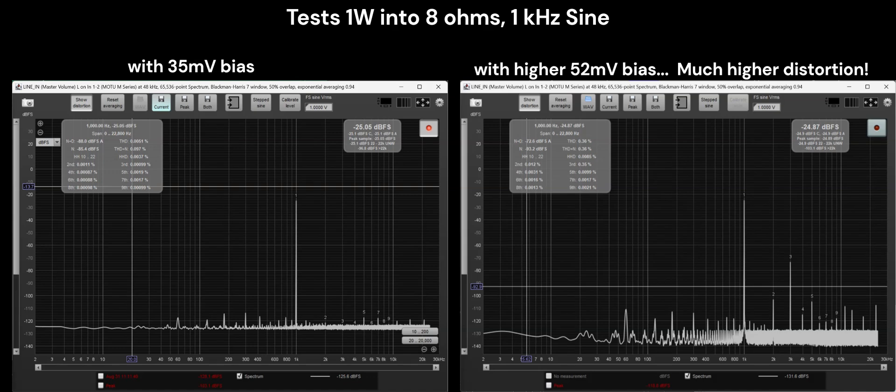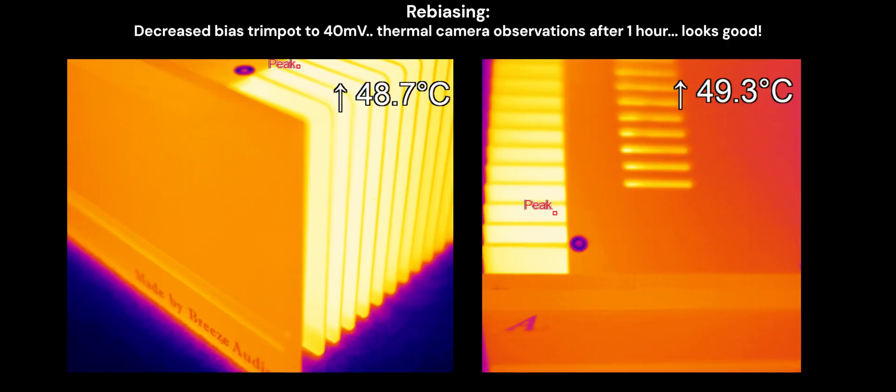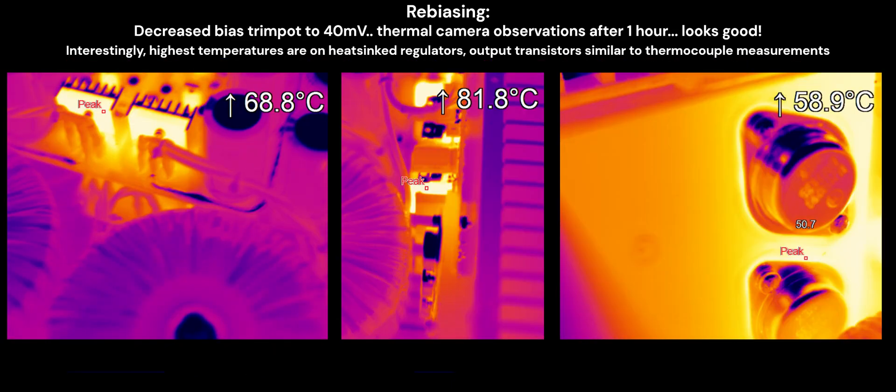Note the original amplifier claims to have a transformer with 1,400 watts capacity. And so the bias was decreased back to 40 millivolts and thermal observations where the camera showed everything was within reasonable range.